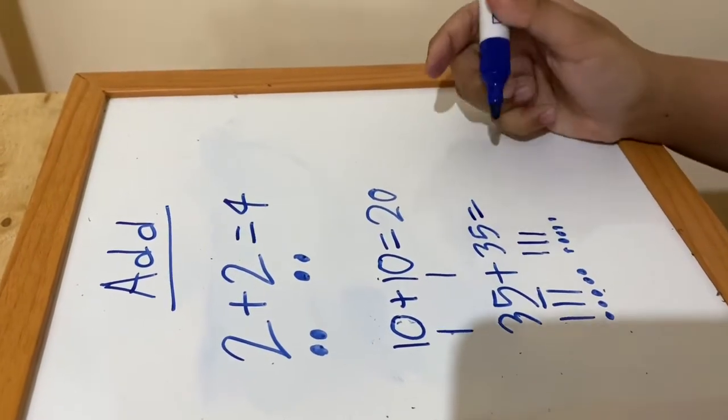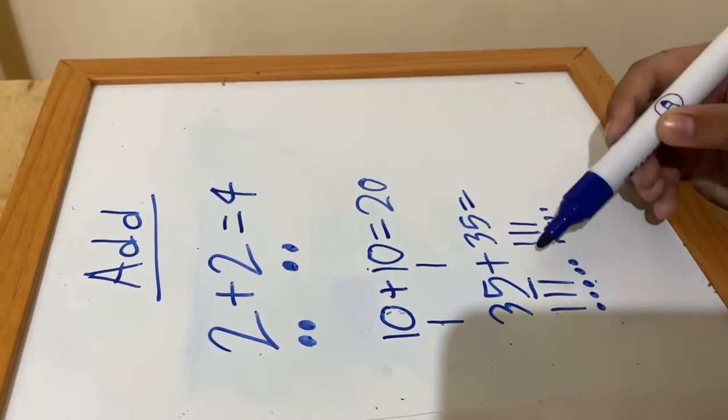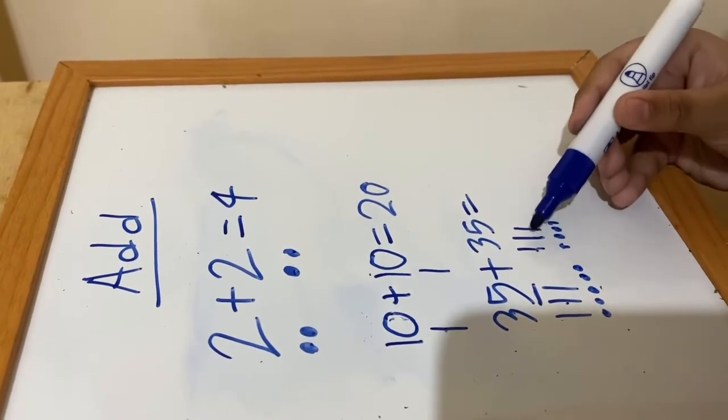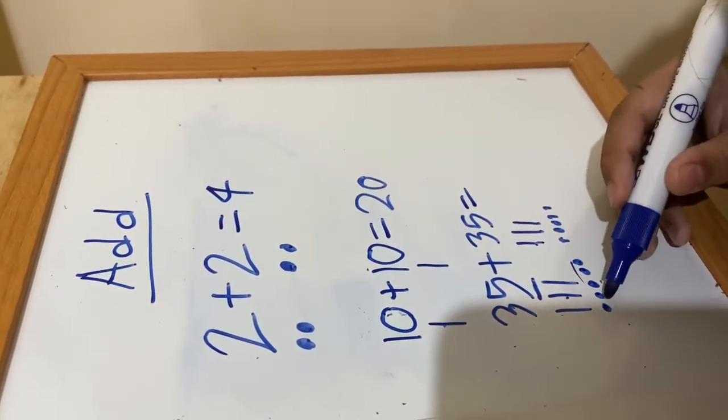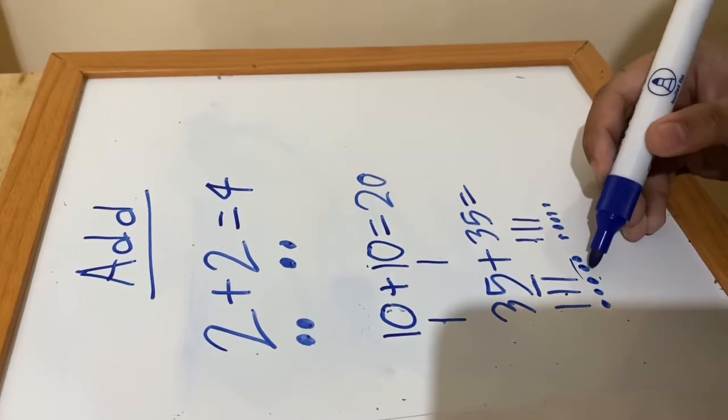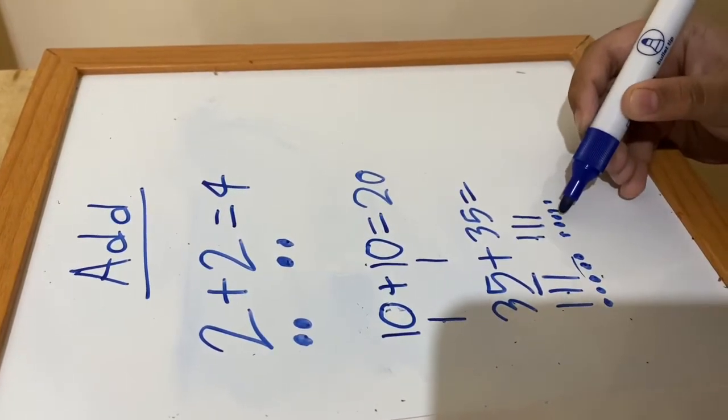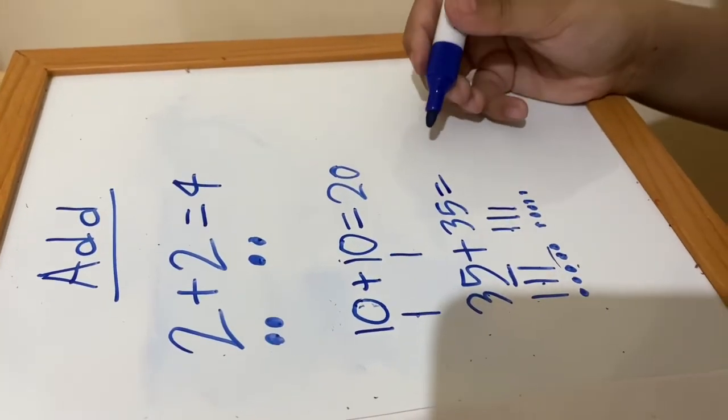And then first add the tens: 10, 20, 30, 40, 50, 60, 61, 62, 63, 64, 65, 66, 67, 68, 69, 70. And the answer is 70.